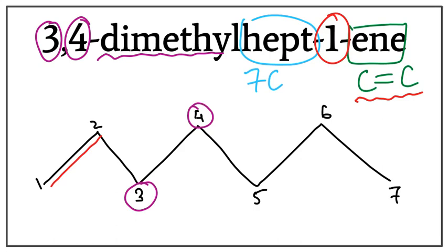Okay, so let's get rid of these numbers and let's attach the methyl on the third carbon and on the fourth carbon. So, this is the structure for 3,4-dimethylhept-1-ene or 3,4-dimethylheptene.